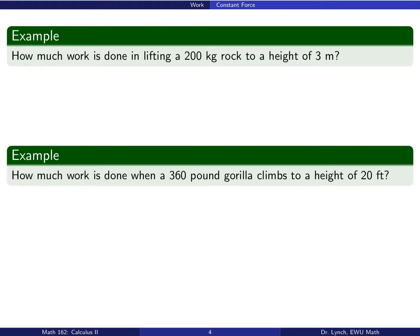So a couple examples illustrating both of these unit systems. Here's a question: how much work is done in lifting a 200-kilogram rock to a height of 3 meters? Having a 200-kilogram rock, we actually have a mass that we need to convert to a force due to the acceleration of gravity. So we see that the force due to the acceleration of gravity acting on this rock is 1,960 newtons. So in order to overcome that force, we need to use a force of 1,960 newtons over 3 meters, which gives us work.